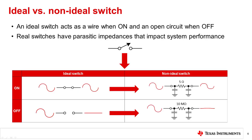An ideal switch would have the properties that it acts as a short when on and an infinite resistor when off. In the on state the output would be the exact same as the input. In the off state both signals would not influence each other at all.